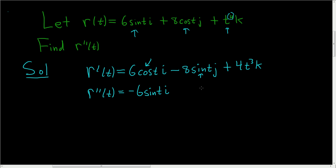The derivative of sine is cosine. So this is negative 8 cosine t j. And here we can use the power rule. So 3 times 4 is 12. And we subtract 1 from the 3. So we get t squared k.